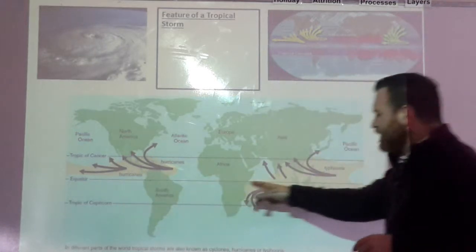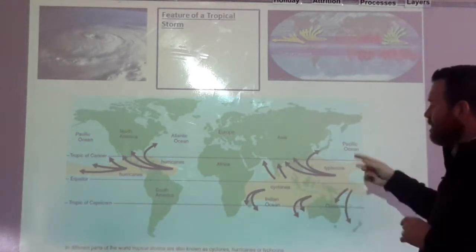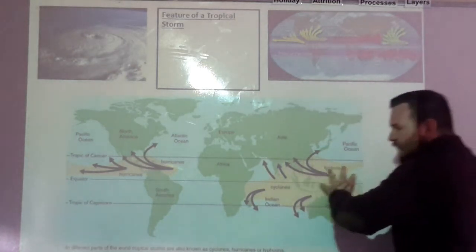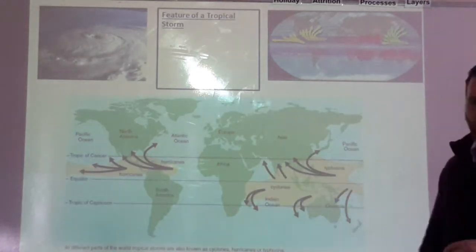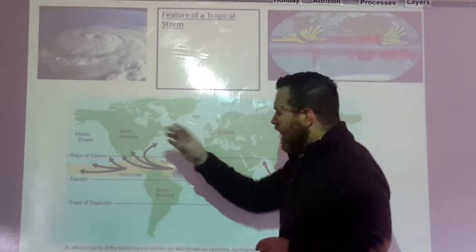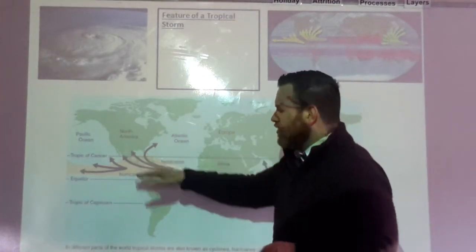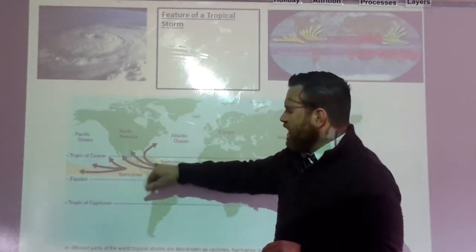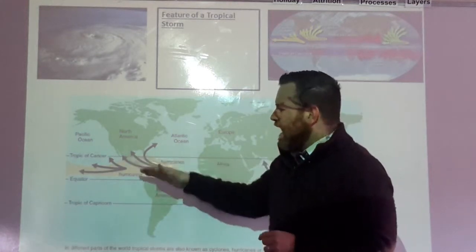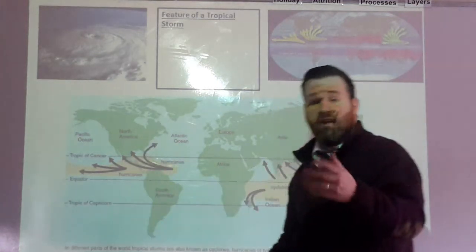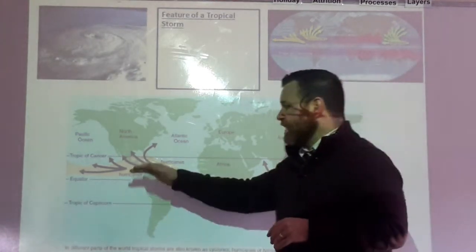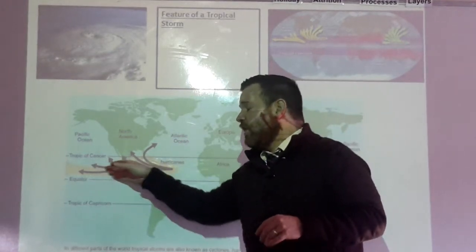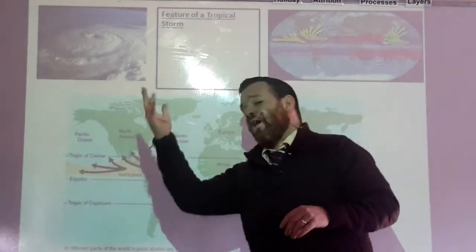To the north, with the equator running through the middle of the world, you've got the Tropic of Cancer, and to the south you've got the Tropic of Capricorn. You can see a narrow band along which tropical storms will form. Over in Central America, the Caribbean, and Southern USA, they are known as hurricanes, and they tend to start out in the Pacific Ocean or the Caribbean Sea and work their way inland, usually hitting places like Southern America — think about Hurricane Katrina — and also Central America. Hurricanes also tend to form on the west coast and then push outwards into the Pacific Ocean, though we never hear about those because they don't cause any damage.